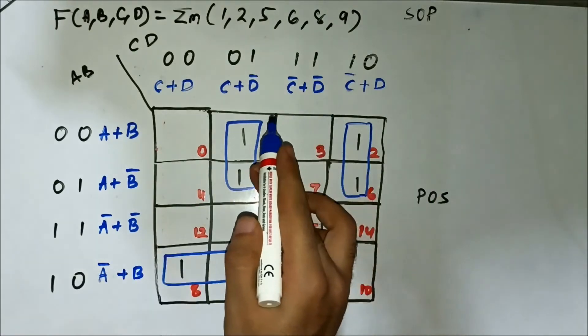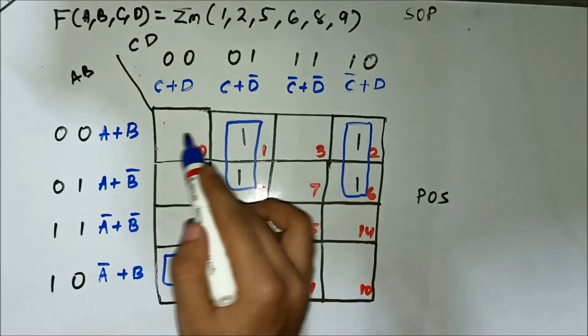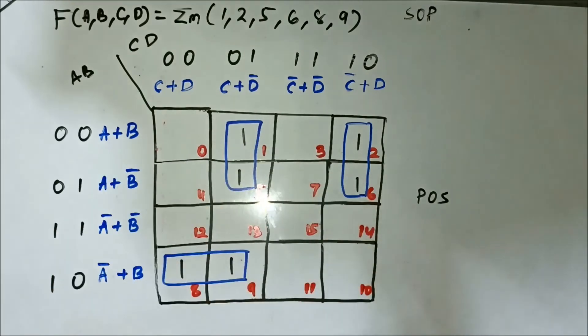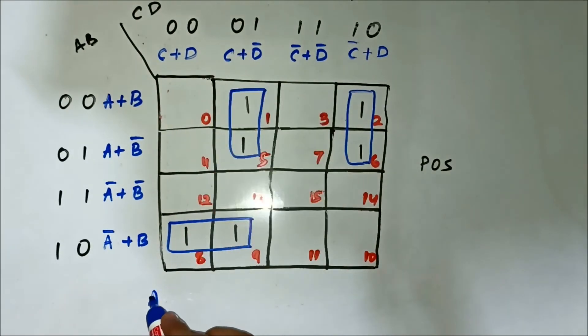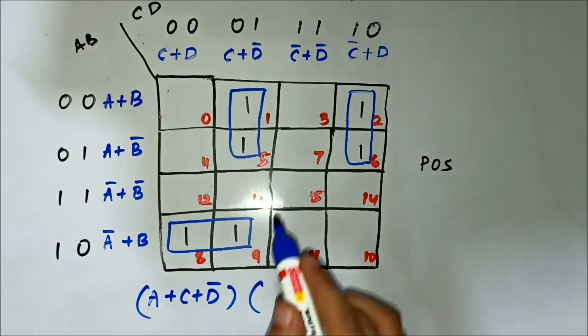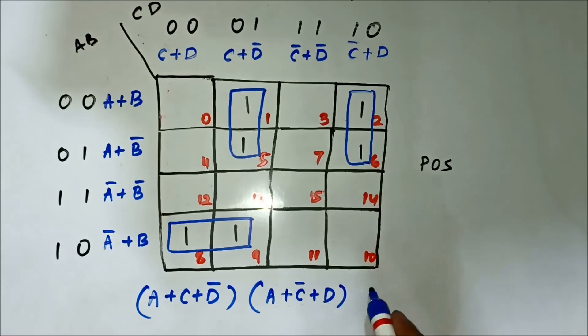Now, identification of the common variables. Here, for this pair, the horizontal side, we have A common, in the vertical side, C plus D bar. Then, for this pair, in the horizontal side, A common, vertical side, C bar plus D. For this pair, in the horizontal side, A bar plus B common, in the vertical side, C common.